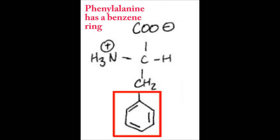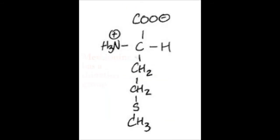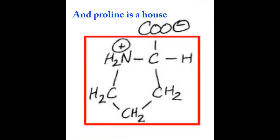Phenylalanine has a benzene ring. Tryptophan has a house in a ring. Methionine has a thiol with a group. And Proline is a house.